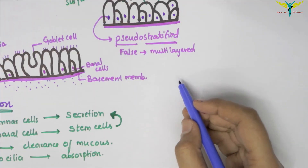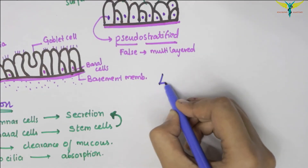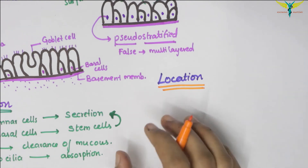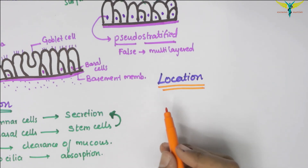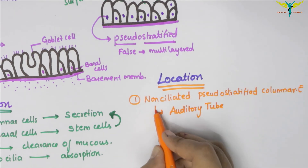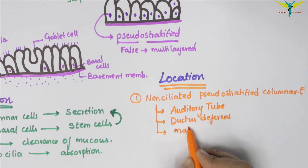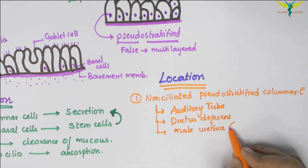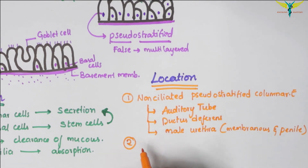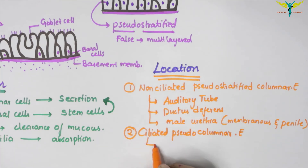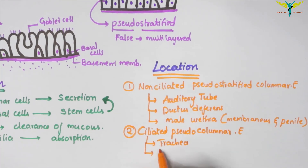Now let's see the location of this pseudo-stratified epithelium. The non-ciliated pseudo-stratified columnar epithelium is found in some parts of the auditory tube, the ductus deferens, and in the male urethra — that is in the membranous and penile parts. The ciliated pseudo-stratified columnar epithelium is seen in the trachea and in the large bronchi.